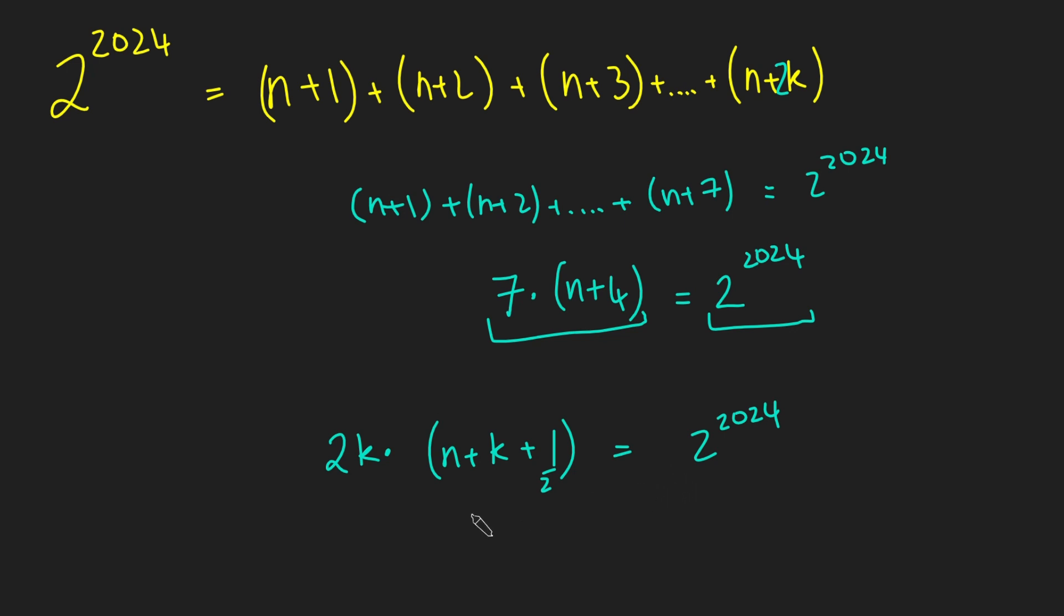So if I just expand the brackets here on this side, or kind of just bring this 2 in there, I get k times 2n plus 2k plus 1 equals 2 to the 2024. Now, what's the issue with this?